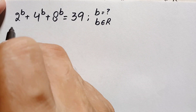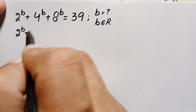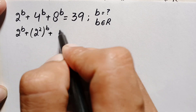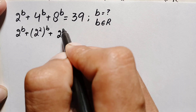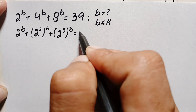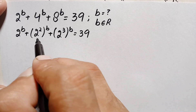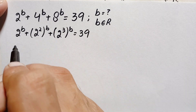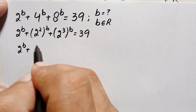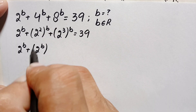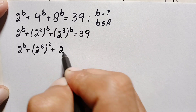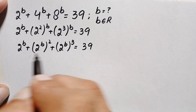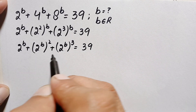First, on the left-hand side we can rewrite: 2 raised to power b, plus 4 written as 2 squared raised to power b, plus 8 written as 2 cubed raised to power b, all equal to 39. Using an exponential identity, we interchange the position of the two powers, so this becomes 2 raised to power b, plus 2 raised to power b whole squared, plus 2 raised to power b whole cubed, equal to 39.